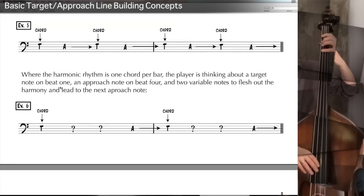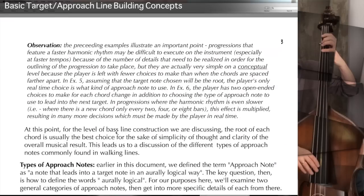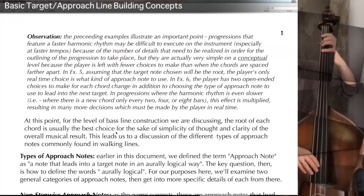Where the harmonic rhythm is one chord per bar, the player is thinking about a target note on beat 1, an approach note on beat 4, and two variable notes to flesh out the harmony and lead to the next approach note. These notes on beats 2 and 3 could be a lot of different things and the line would still work — you're landing on a target on beat 1, approaching on beat 4, and filling in the space on beats 2 and 3. This leads to an important observation about bass line construction, especially in the beginning phases.